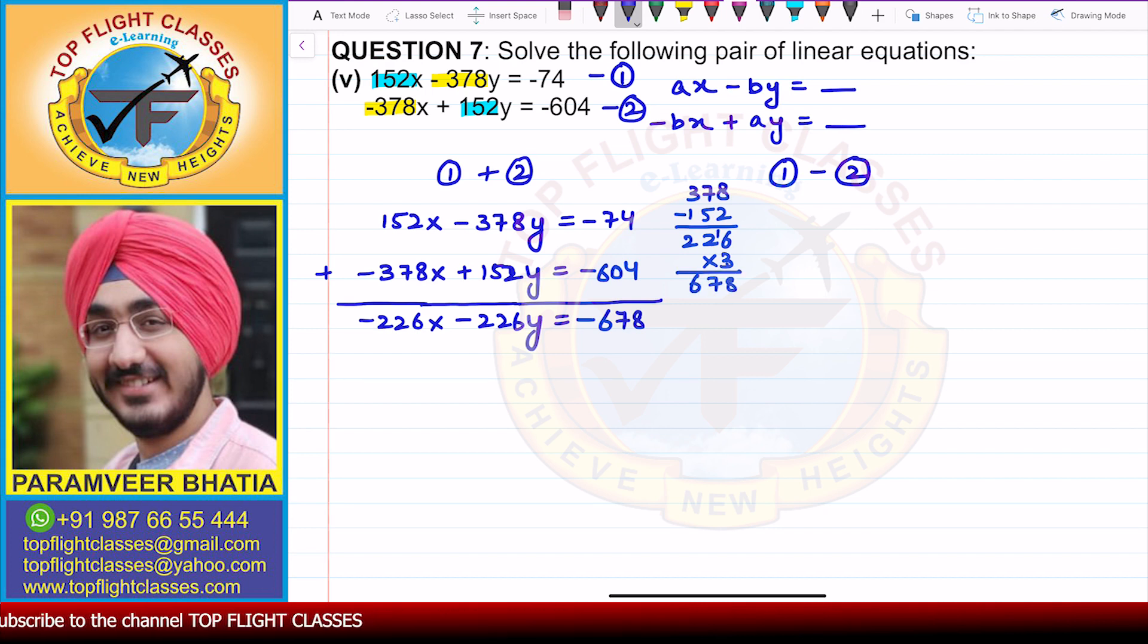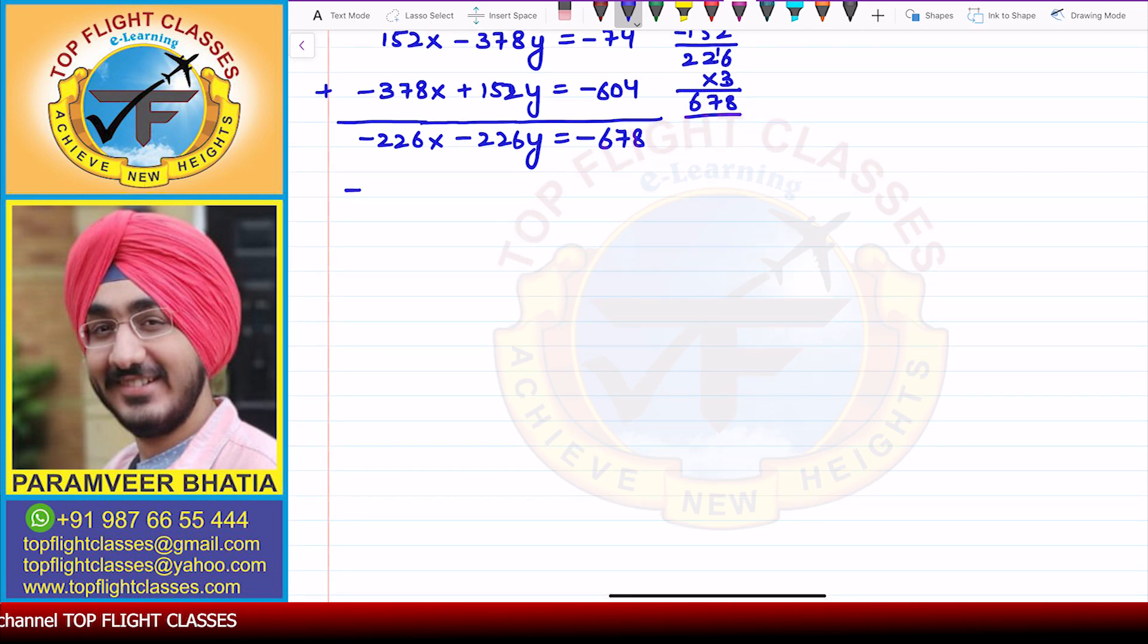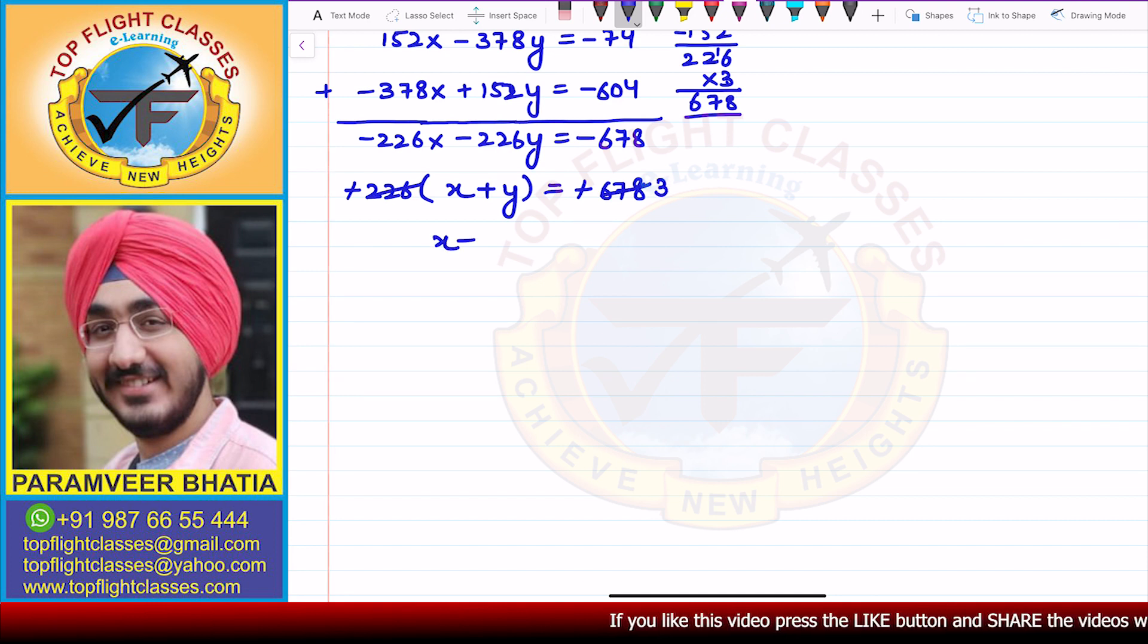Now 226 into 3 is 678. So you can take -226 common out. Inside, you will get x + y is equal to -678 divided by -226. Minus minus cancel. 226 and 678, 3 is common. So you have x + y = 3. So this becomes our third equation.